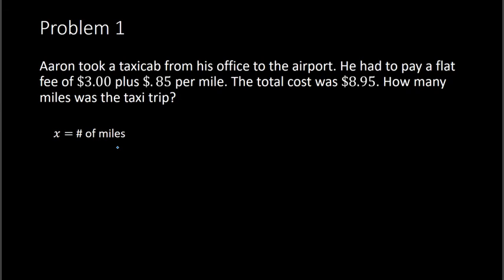Now we need to set up an equation. Think through what the problem is saying and figure out, without putting numbers in yet, how to set up an equation. Here, you know that you have a total cost, which includes a flat fee plus the cost for the miles that you travel. So we can say that if we take the flat fee plus the mileage cost, that would equal your total cost. It's helpful to think through the equation in words before you plug in the numbers. From here, we can plug in numbers. The flat fee is $3, and the total cost was $8.95.